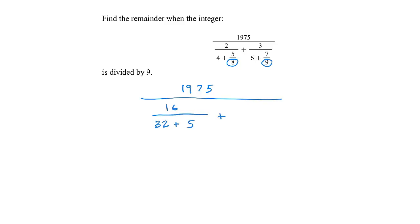Our other fraction gets multiplied top and bottom by 9. So we would get 27. 9 multiplied by 6 is 54 plus 7.